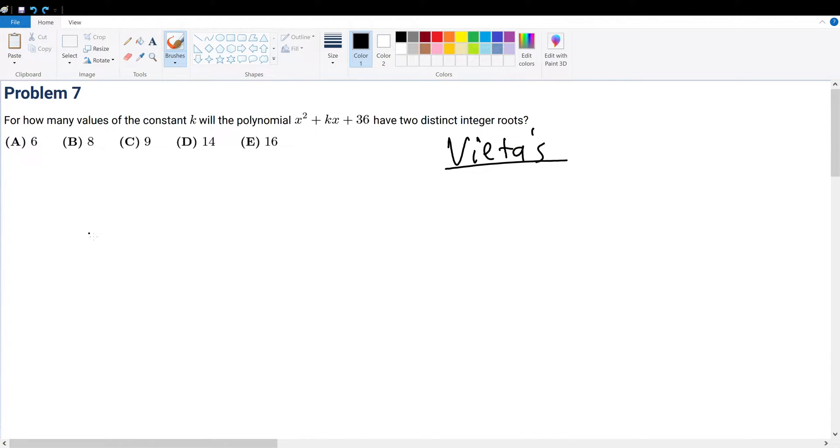What is Vieta's? For ax squared plus bx plus c, it basically says that for any given polynomial with constants a, b, c, the product of the roots, so x1 times x2, would be equal to c over a.